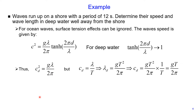We also know that wave speed equals wavelength divided by wave period. And we know that for deep water, the wavelength equals gravity multiplied by wave period squared divided by 2π. Substituting this into the equation, we finally get the equation for wave speed for deep water: wave speed equals gravity multiplied by wave period divided by 2π. So for deep water, the wave speed depends only on the wave period.